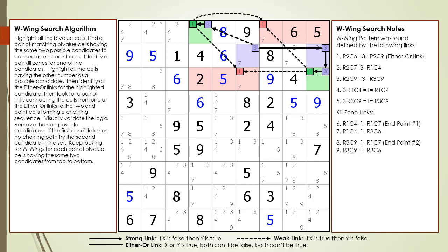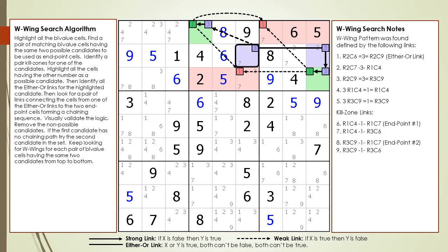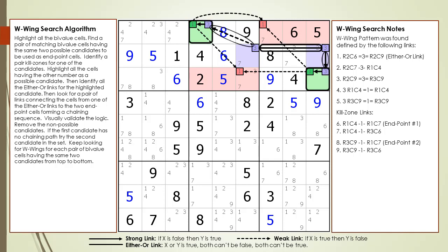The either-or link in the middle of the W-Wing is the most important piece of the chaining sequence. It acts in the same way as a pivot cell does with an XY-Wing. Between cell 2,6 and cell 1,4 there is a weak link relationship, and between cell 2,9 and cell 3,9 there is a strong link relationship. There can be a weak or strong link connecting the endpoint cells to the either-or link in the middle of the W-Wing, but there must be an either-or link between the endpoint cells for a W-Wing to work.